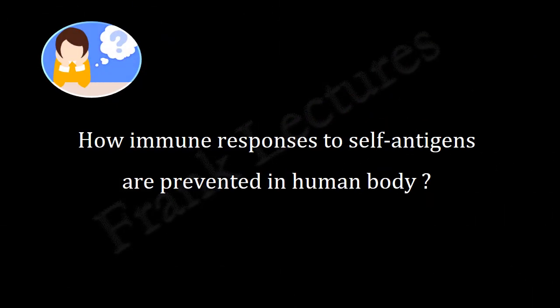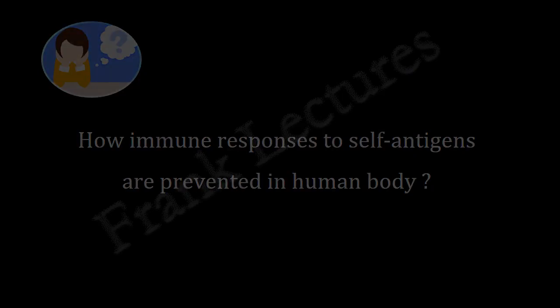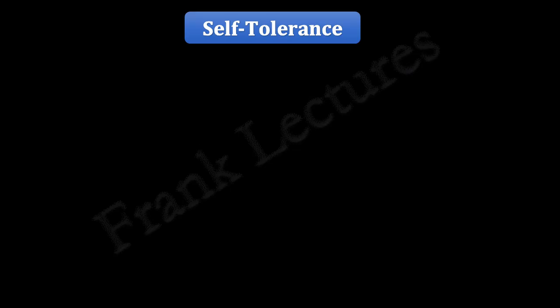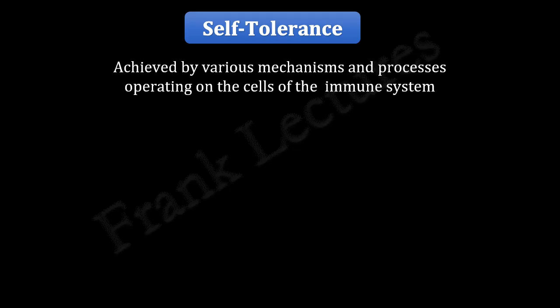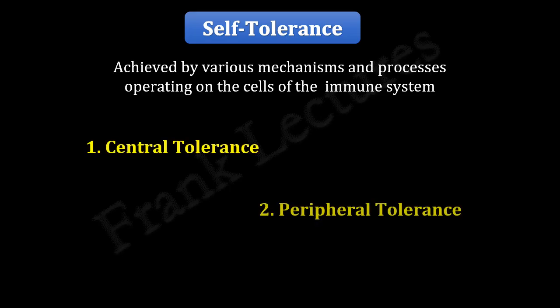Let's find out how immune responses to self-antigens are prevented in the human body. Self-tolerance is achieved by various mechanisms and processes operating on the cells of the immune system. Establishment of self-tolerance can be divided into a two-step process: the first step is known as central tolerance, and the second step is known as peripheral tolerance.